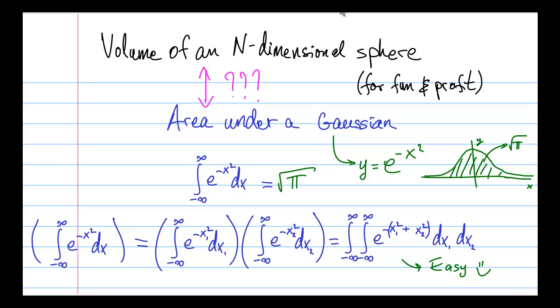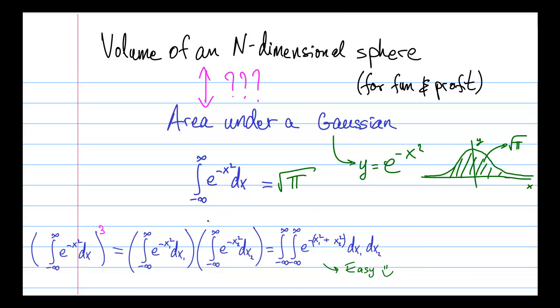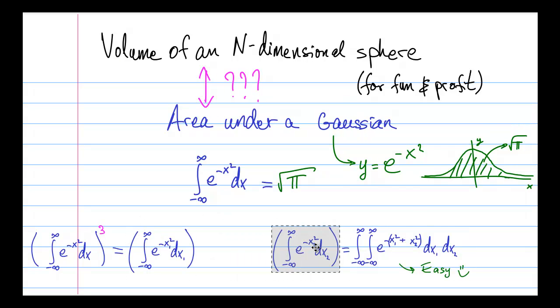And so let's try to work out this expression, cubed, before we had it squared. And this integral cubed, we just write this integral down 3 times, change the variables to be x1, x2, and x3 in the first, second, and third integral.